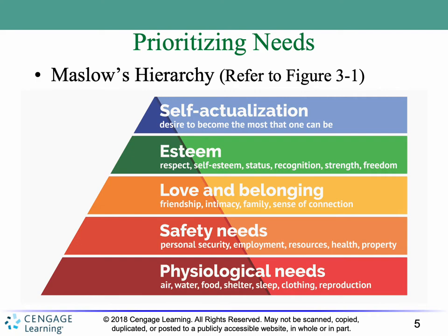Then we can move to the next level, which is our safety needs — our personal security, employment, access to resources, our health, our property. Once those are satisfied — for example, if I'm worried for my life, afraid for my life, I'm not worrying about what's due at school tomorrow. I'm worrying about my safety, my personal security. And until that need is met, I can't move up the hierarchy to the next level, which would be love and belonging — our friendships, relationships, and connections with other people.